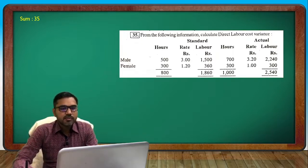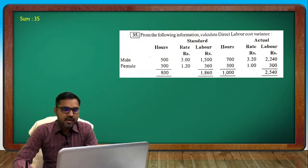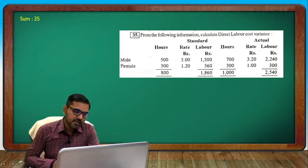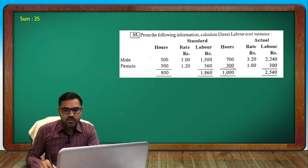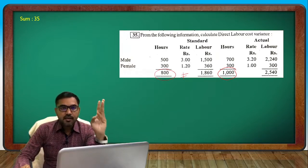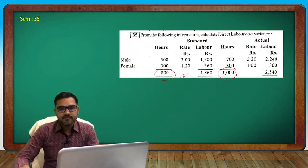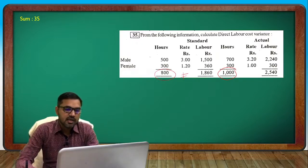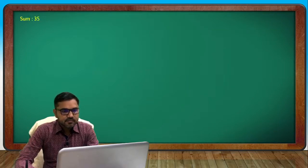The format is built here. Looking at total: 800 hours were there and cost was 1860. Actual has 700 and 300, making total actual hours 1000, which is not equal to standard 800. We need to calculate rate, efficiency, mix, and sub-efficiency variance, plus Revised Standard Mix (RSM) since quantity differs.